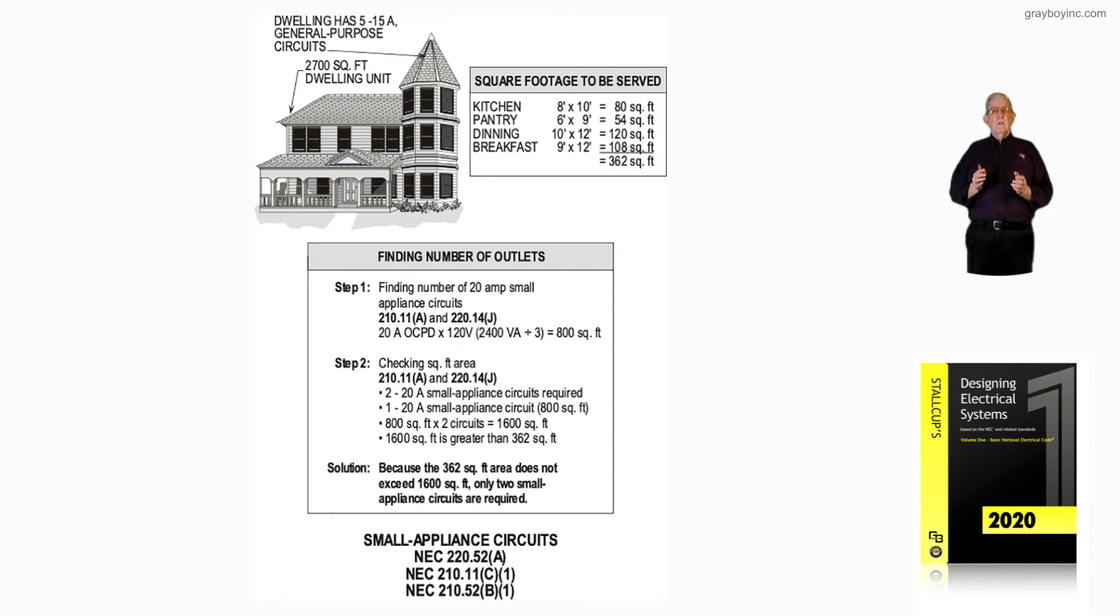So, two very easily supplies the 362 square foot, and a lot of times they gauge the minimum number of small appliance circuits with the procedure that we just calculated in step one and step two,